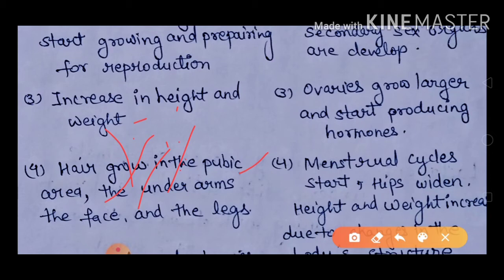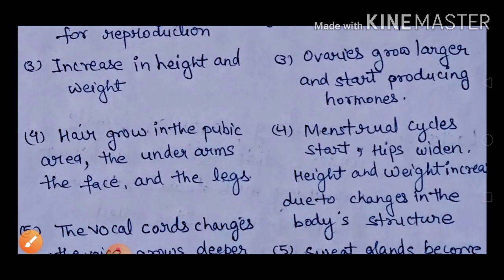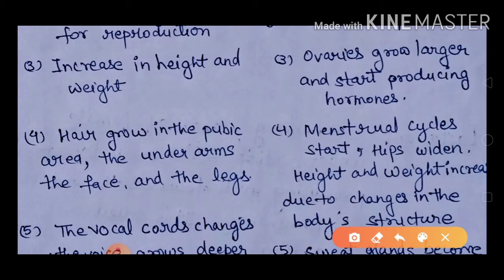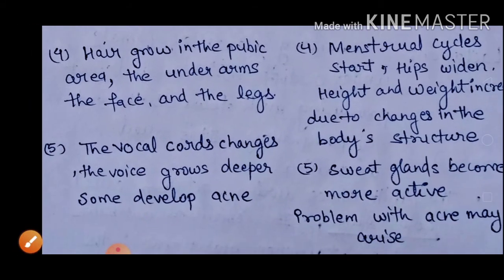During puberty, girls start the menstrual cycle. The menstrual cycle involves monthly periods in which the ovum is discharged from the ovary. Because the ovum is not fertilized, it is discharged in the form of menses. The hips widen and height and weight increase due to changes in body structure and features, including breast development.